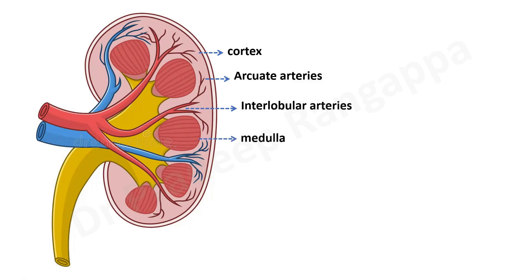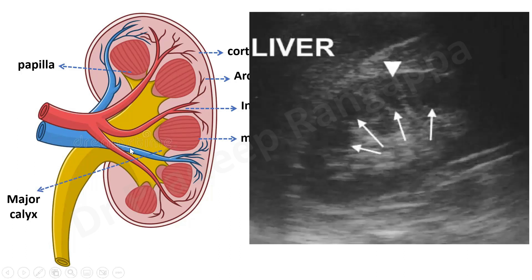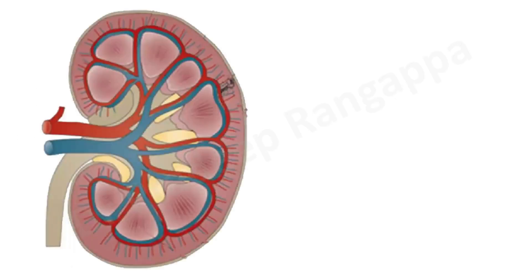Then there is the medulla in the cross-section of the kidney, and this is the papilla. You have the major calyx here. When you look at the kidney on ultrasound, it looks like this. I will take you through how each area looks in the renal ultrasound. One needs to understand the cross-sectional image of the kidney, and how we find it in ultrasound — we will go step by step.